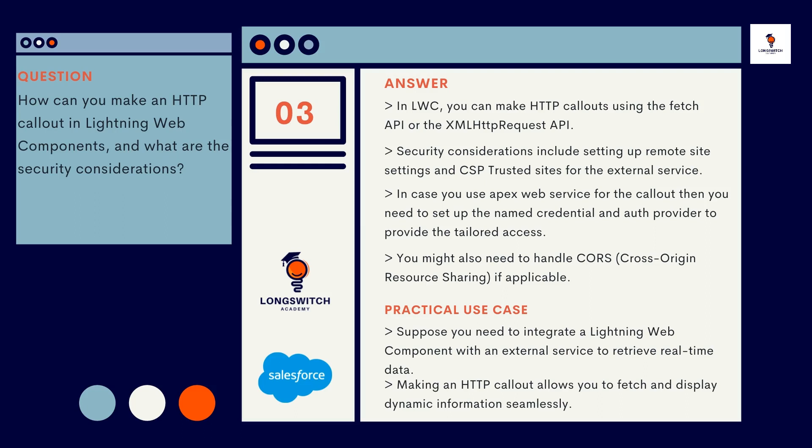Question number 3: How can you make an HTTP call-out in Lightning Web Components, and what are the security considerations? In LWC, you can make HTTP call-outs using the Fetch API or the XMLHttpRequest API. Security considerations include setting up remote site settings and CSP-trusted sites for the external service. If you use an Apex Web Service for the call-out, you need to set up the named credential and auth provider to provide tailored access. You might also need to handle CORS (cross-origin resource sharing) if applicable.